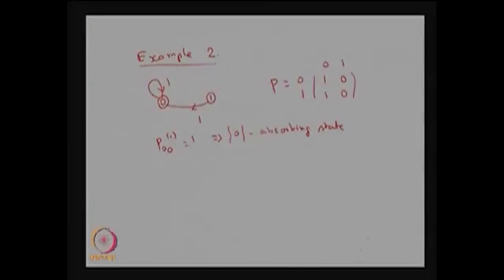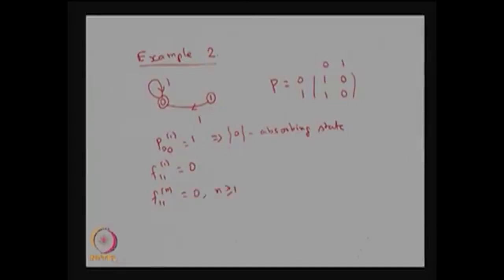Now we will find the classification of state 1. If we find F₁₁(1), the probability that the system returns to state 1 for the first time exactly in the first step given it started in state 1 — that is not possible, because with probability 1 it moves to state 0. Therefore F₁₁(1) = 0. All subsequent F₁₁ values are also 0 because if the system starts from state 1 it goes to state 0 with probability 1 and does not come back. Therefore F₁₁ = 0.